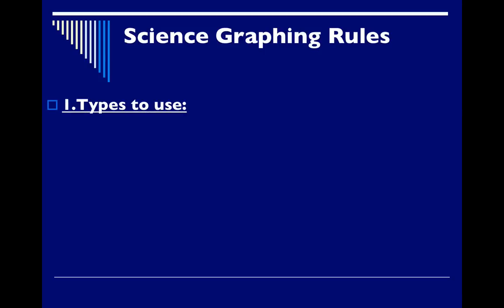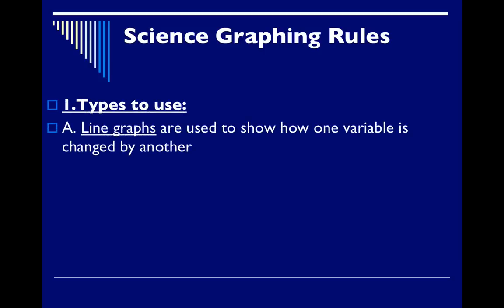So let's look at a few different types that are out there. First of all we could use a line graph and we would use that if we were trying to show how one variable will be changed by another. Let's take a look at a line graph and see how that works.